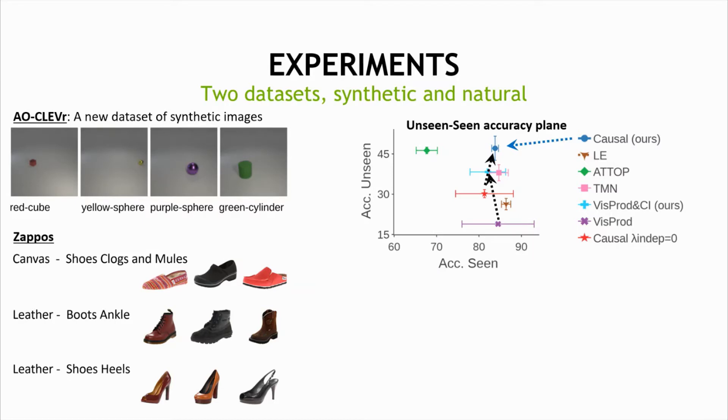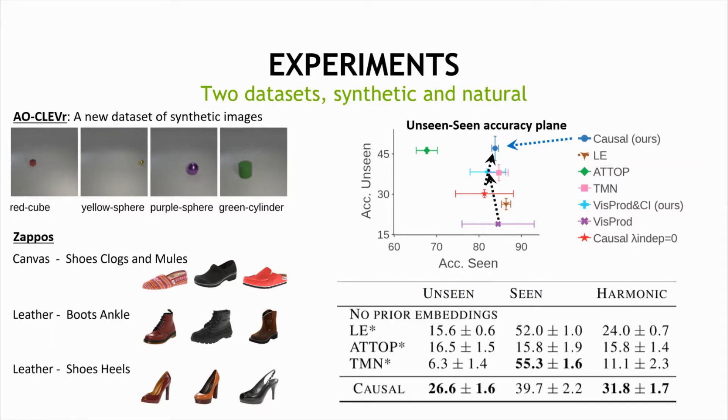The second dataset is the Zappos dataset of fine-grained types of shoes with 12 object types and 16 attributes, like canvas or leather. And again, we see that overall the causal approach improves the recognition accuracy for new combinations.